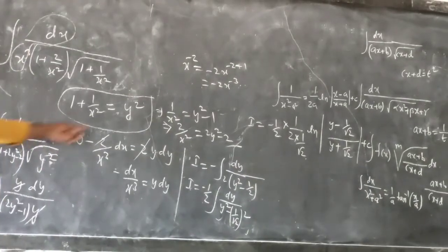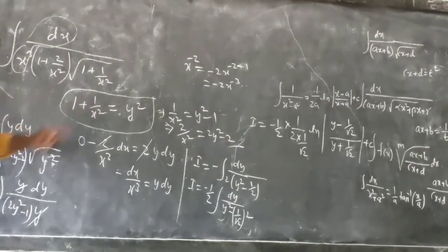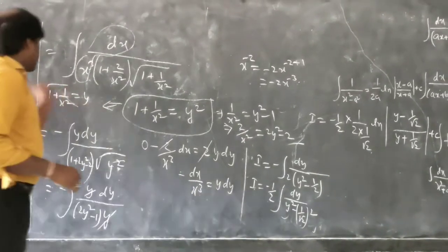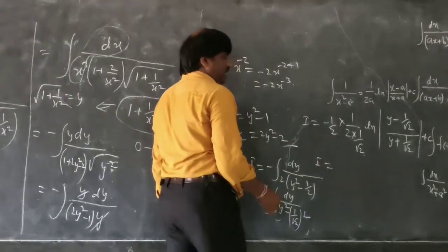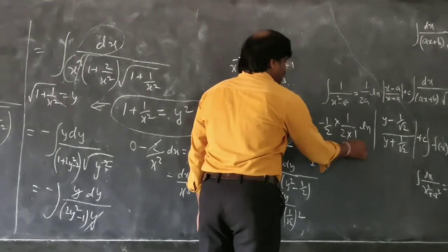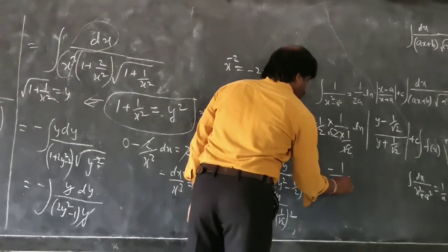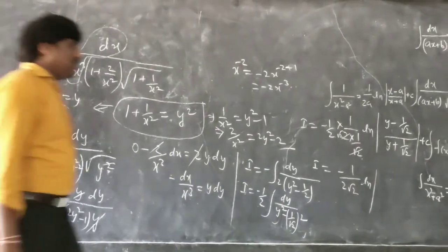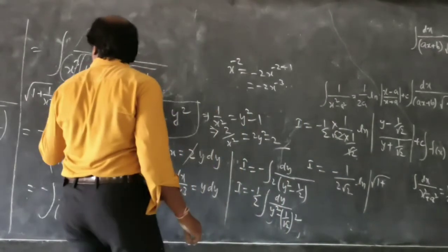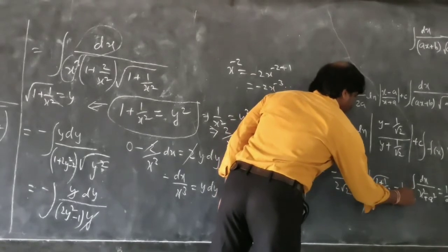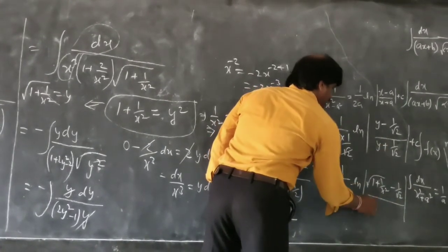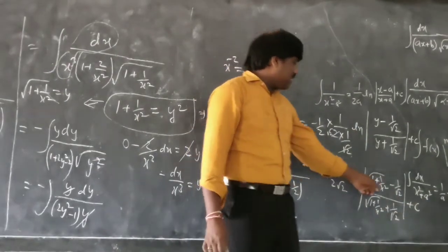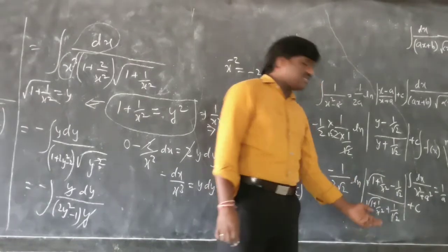Finally, substitute back y = √(1 + 1/x²). After cancellation, the answer is i = −1/(2√2) · ln|( √(1 + 1/x²) − 1/√2 ) / ( √(1 + 1/x²) + 1/√2 )| + C. This is the final answer.